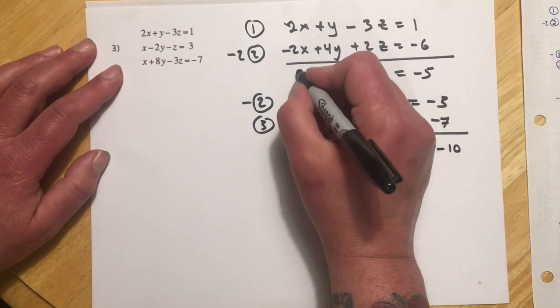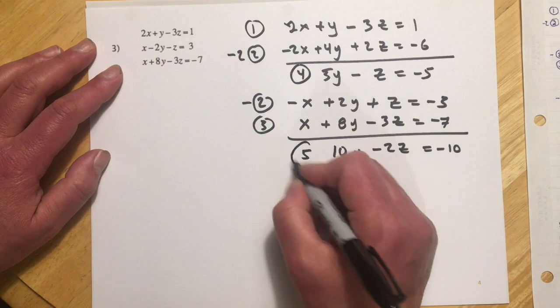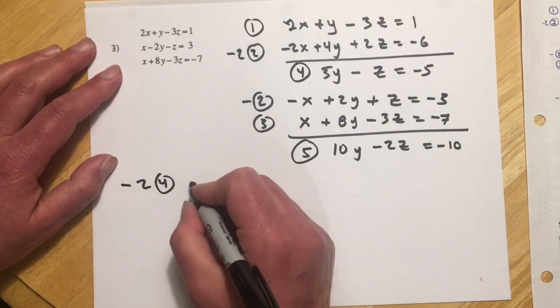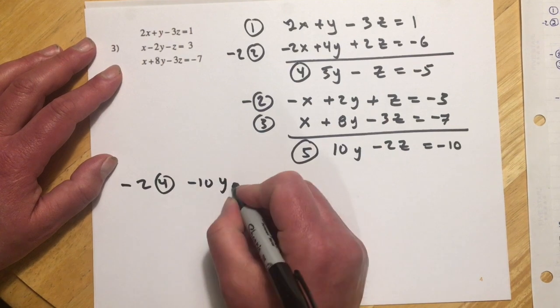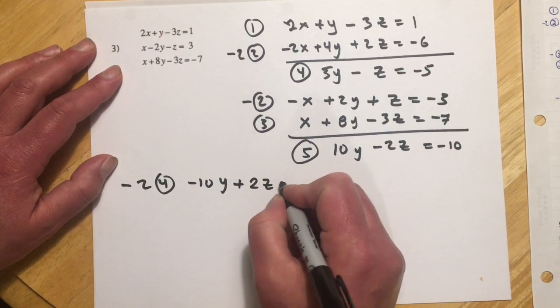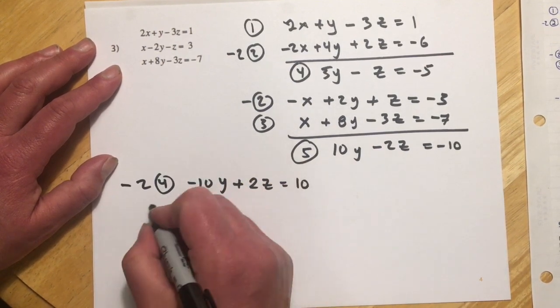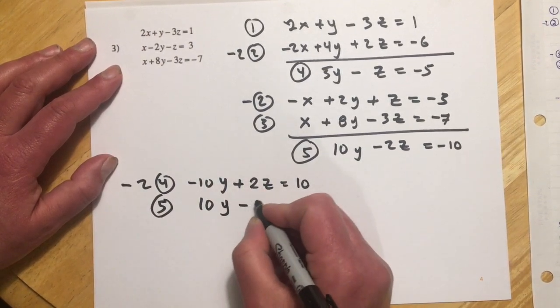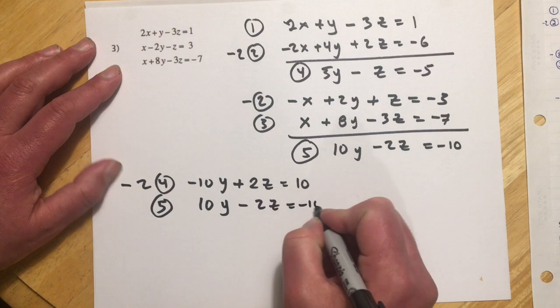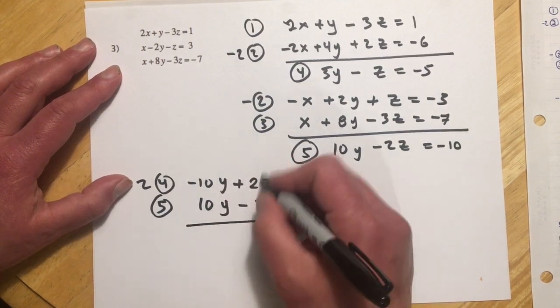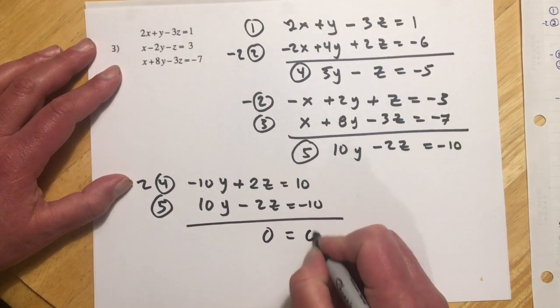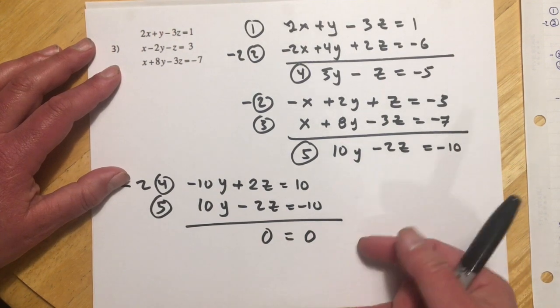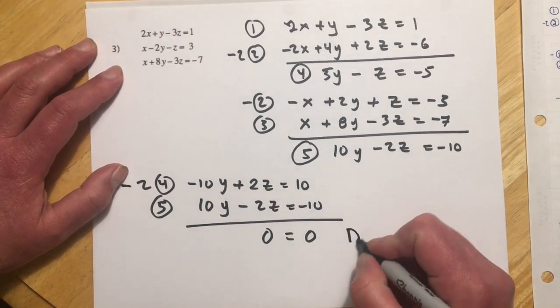And so this time, if this is my 4 and this will be my 5, I'll go negative 2 times equation 4. So that's negative 10y plus 2z equals 10. And I'll do equation five with that. And then you see what happens, everything drops out. So I get zero equals zero instead of like a false statement. This one's not very interesting, but it's a true statement. And so what that means is that this system is dependent.